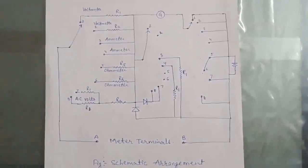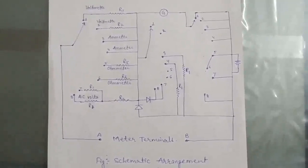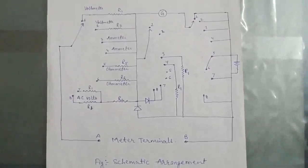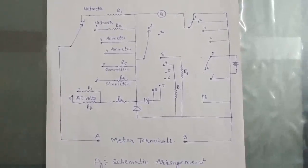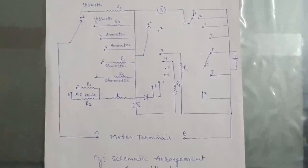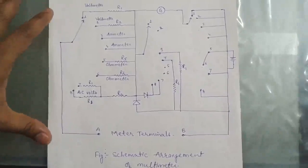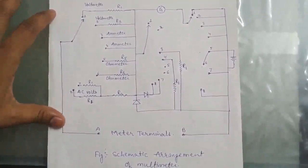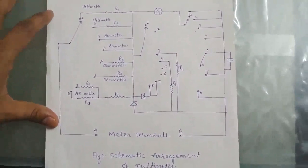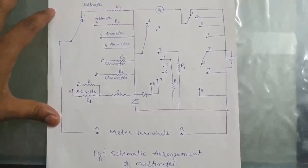Good morning. Today's topic is how to measure DC and AC voltage by using a multimeter. Now we see a systematic arrangement of the multimeter's internal circuit for the measurement of resistance, current, and voltage.